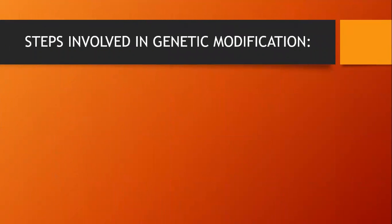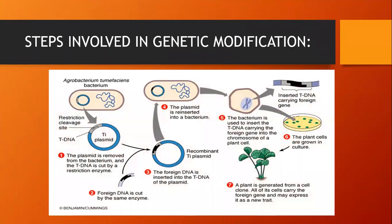Now the steps involved in genetic modification using the bacterium Agrobacterium tumefaciens as an example: The first step includes removing the plasmid from the bacterium and cutting the transfer DNA with a restriction enzyme. The foreign DNA is cut by the same enzyme used to cut the Agrobacterium tumefaciens. The foreign DNA is then inserted into the transfer DNA of the plasmid, making a new DNA called the recombinant transfer plasmid.